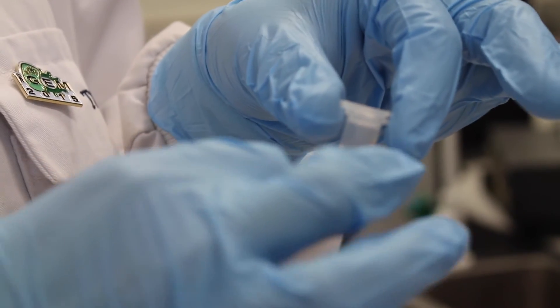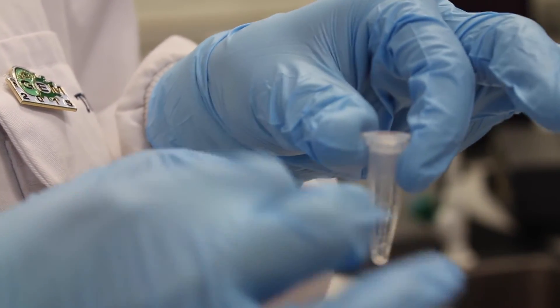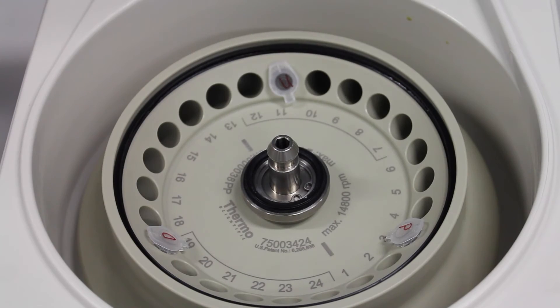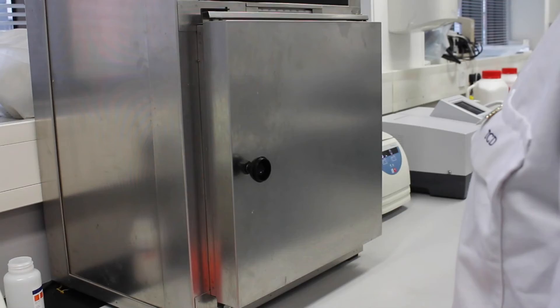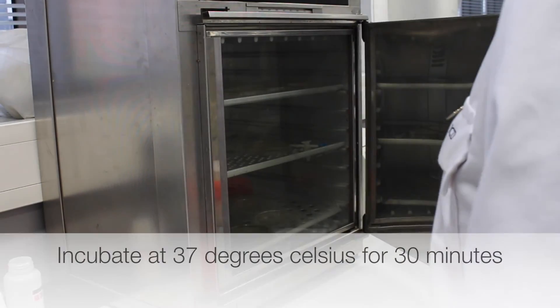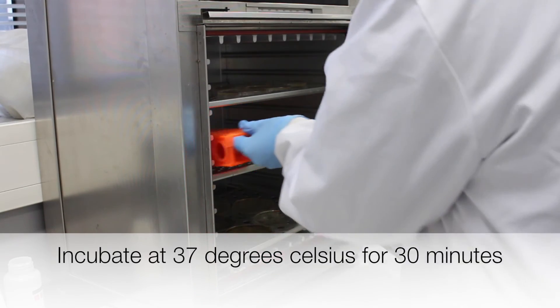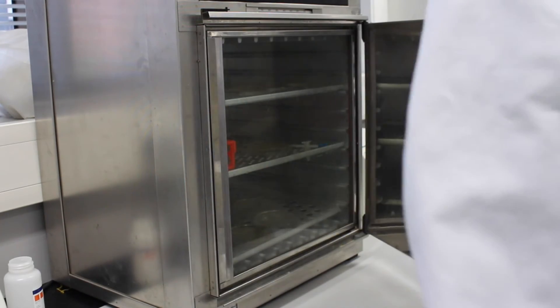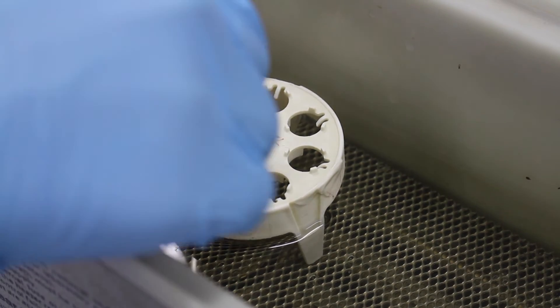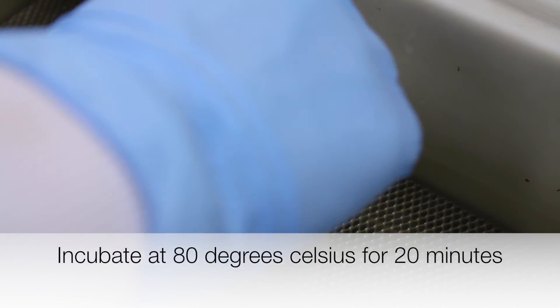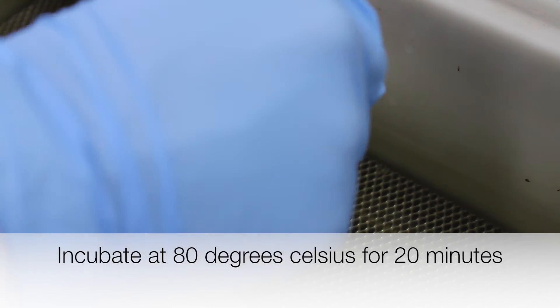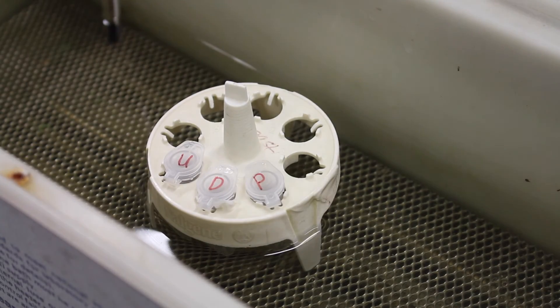Each tube is flicked in order to mix the contents. The tubes can be spun in the microcentrifuge for a few seconds to collect the liquid in the bottom of the tubes. The tubes are then incubated at 37 degrees Celsius for 30 minutes. After 30 minutes, the tubes are transferred to a water bath that's been set at 80 degrees Celsius and left for 20 minutes. This will denature the restriction enzymes.